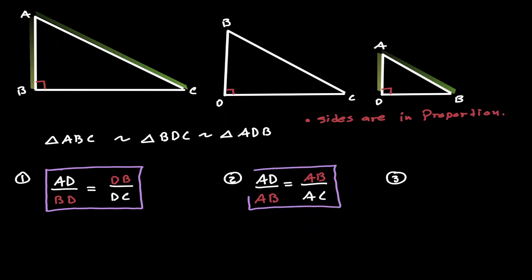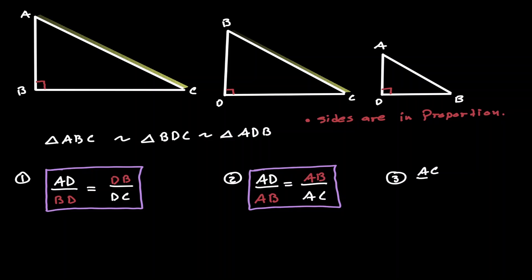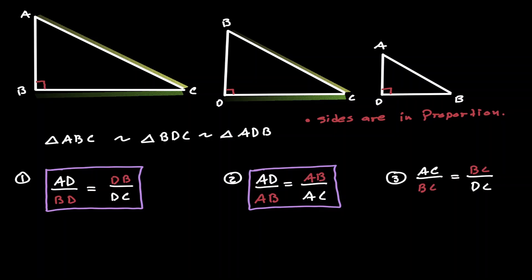For our third scenario, let's compare the big right triangle with the middle right triangle. We can say that AC is in proportion with BC, and then BC is in proportion with DC. Notice that we have the same scenario as before — the denominator of the first fraction is equal to the numerator of the second fraction. We will use this proportion when working with similar right triangles.